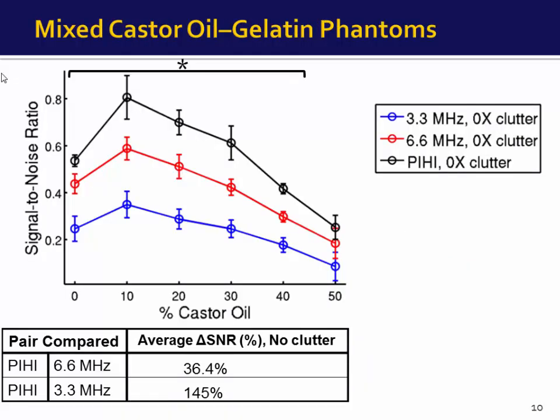Shown here is SNR on the y-axis versus castor oil percentage. In blue is the 3.3 MHz TSI data, in red the 6.6 MHz data, and in black the pulse inversion data. For castor oil percentages from 0 to 40 percent, the SNR for pulse inversion tracking was better than fundamental tracking — 36.4 percent improvement compared to 6.6 MHz and 145 percent improvement compared to 3.3 MHz.